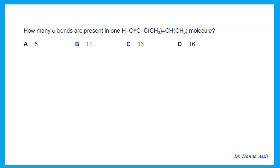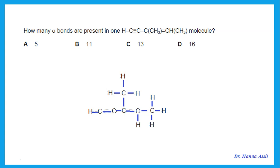Again, how many sigma bonds are present in this molecule? Draw it out. Every single bond is a sigma, and the double and triple bonds each have one sigma. We have a total of 13 sigma bonds.